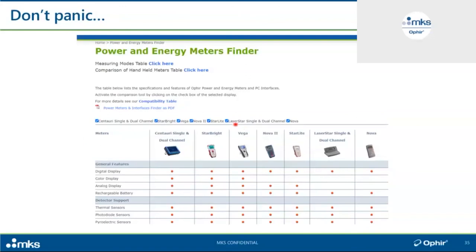Unlike the Sensor Finder, the Meter Finder is not a software tool — because differences between meters aren't technical, we can't calculate the best meter for you. It's more like a set of comparison tables: which measurement modes are available with each instrument, which sensor families are supported, a compatibility table. Again, no need to panic — the more you understand the considerations, the better these tools will serve you.